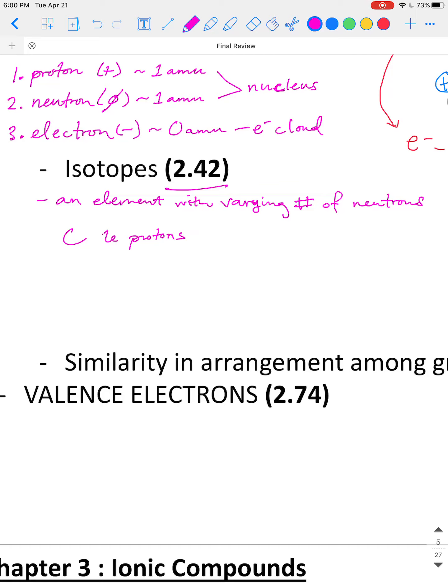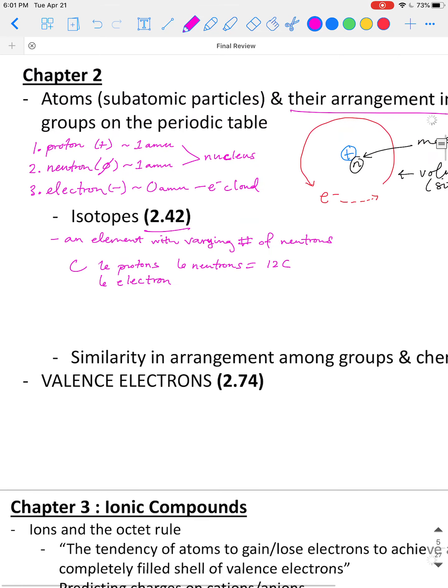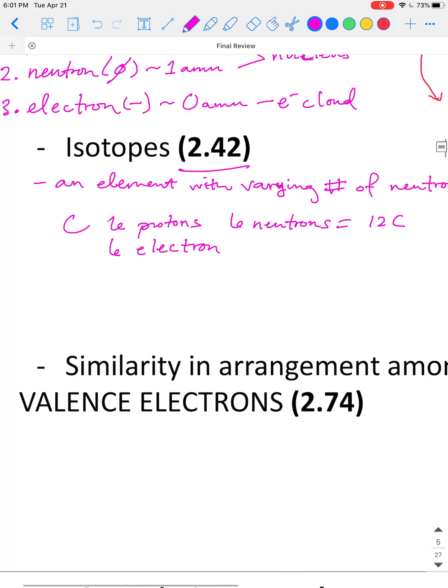So an element with varying number of neutrons. For example, carbon. Carbon generally has 6 protons and 6 neutrons. That gives us carbon 12. And then if it has 6 protons, we know that it has 6 electrons. That's another thing that I didn't mention above, that the number of protons and electrons for a neutral atom are the same.